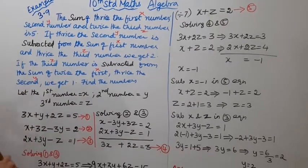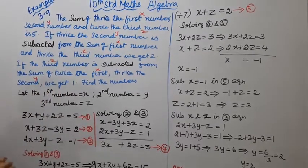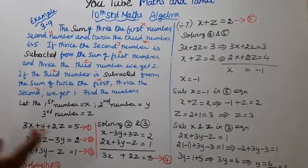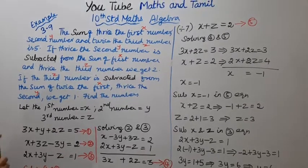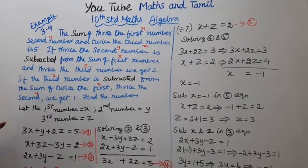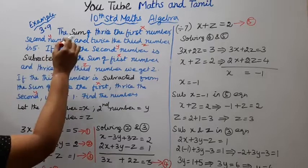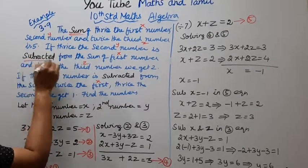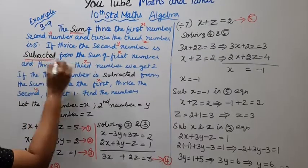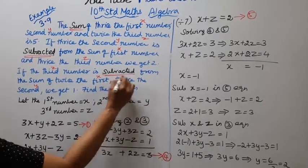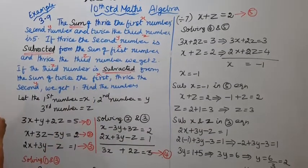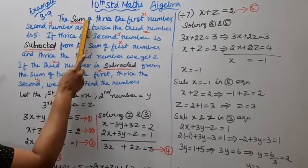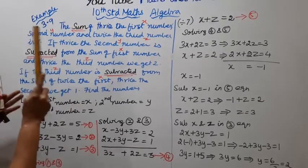Twice means two times, thrice means three times. Sum means addition. Subtracted means subtraction.